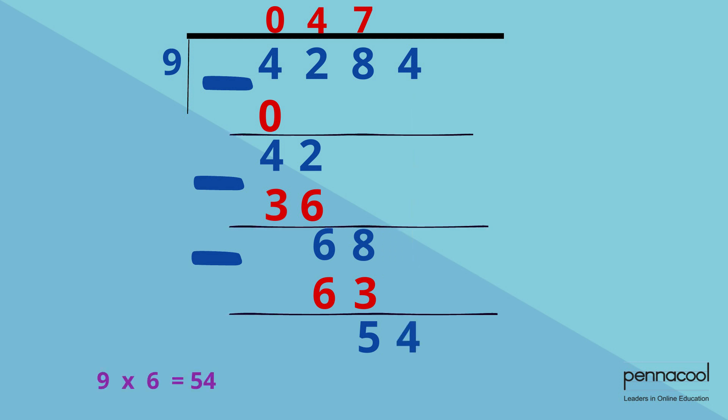54 divided by 9 gives us 6. The 6 is placed in the answer place at the top, and because there are no remainders, there is nothing left to be divided, so that is the end of our sum.